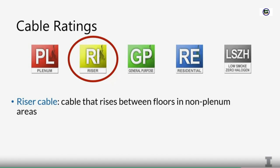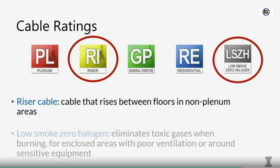There's also low smoke zero halogen cable. This is cable where it's manufactured to eliminate toxic gases when it burns. It's designed for enclosed environments where you have people where it might be hard to evacuate. If your building catches fire, you don't want everybody getting smoke in their eyes so they can't see, breathing toxic gases and passing out because they can't get out of the building. You want to use low smoke zero halogen cable because when it burns, it'll burn nicely and won't emanate toxic gases. It's good for enclosed areas with poor ventilation or around sensitive equipment which can be damaged by chemicals.